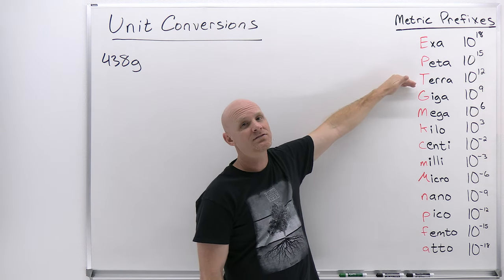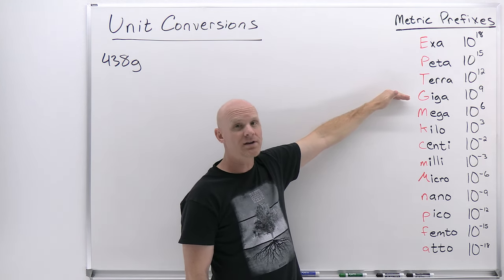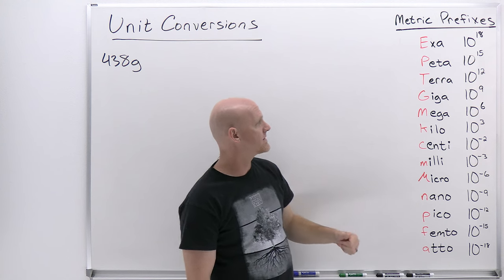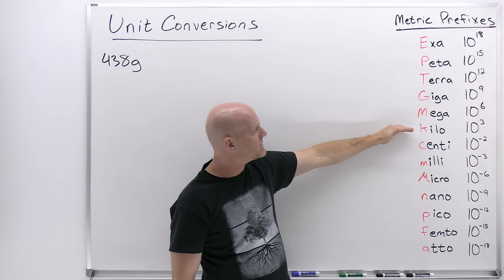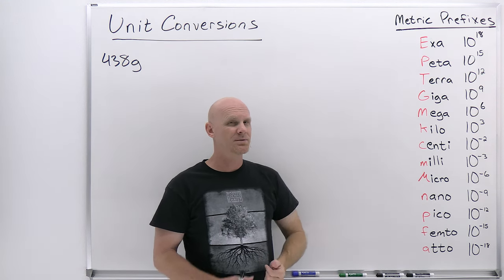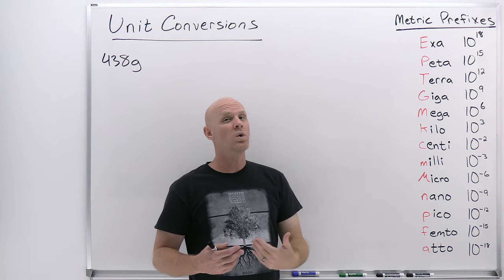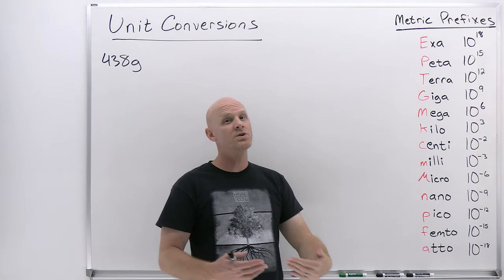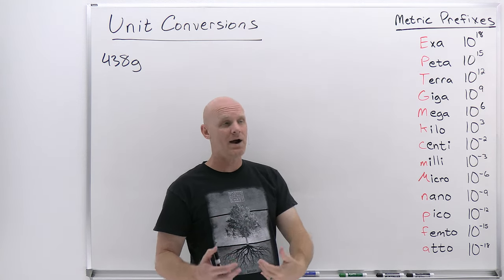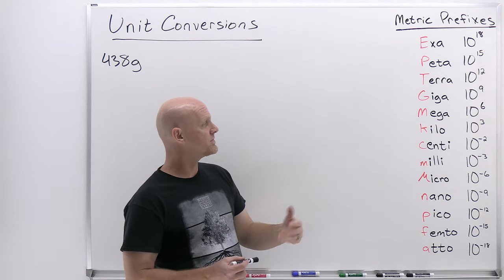Tera means one trillion, so a terameter is one trillion meters. Giga means a billion — a gigameter is one billion meters, and gigabytes is one billion bytes, which comes up in computer terminology. Mega means a million, kilo means a thousand. Centi is a little funky — it means one one-hundredth, just like a cent is one one-hundredth of a dollar. It doesn't mean a hundred, despite the centipede connection.